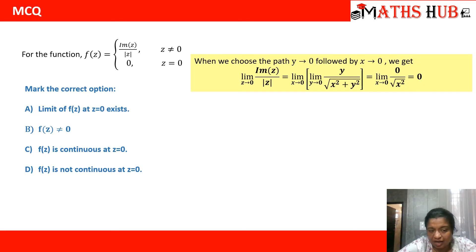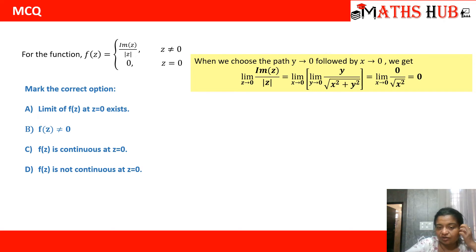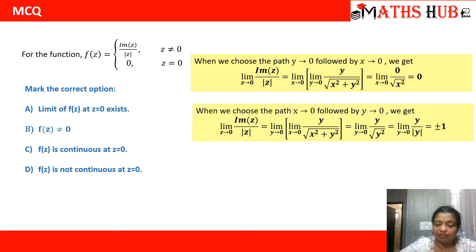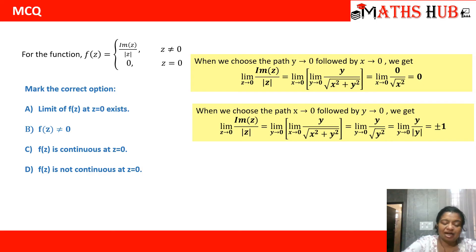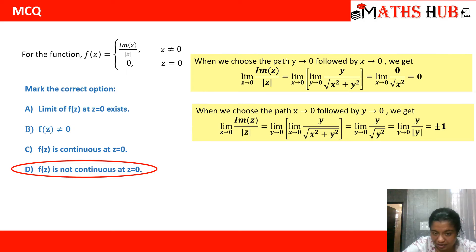To choose the correct option, let us calculate the limit value. We choose the path y approaches to 0 followed by x approaches to 0. The imaginary part of z upon mod z becomes y upon the square root of x squared plus y squared. When y approaches to 0 first, the limit is 0. Along the second path, x approaches to 0 first, giving y upon the square root of y squared, which equals plus or minus 1. Since the two path limits differ, the limit does not exist, and therefore the function is not continuous. The last option is correct.